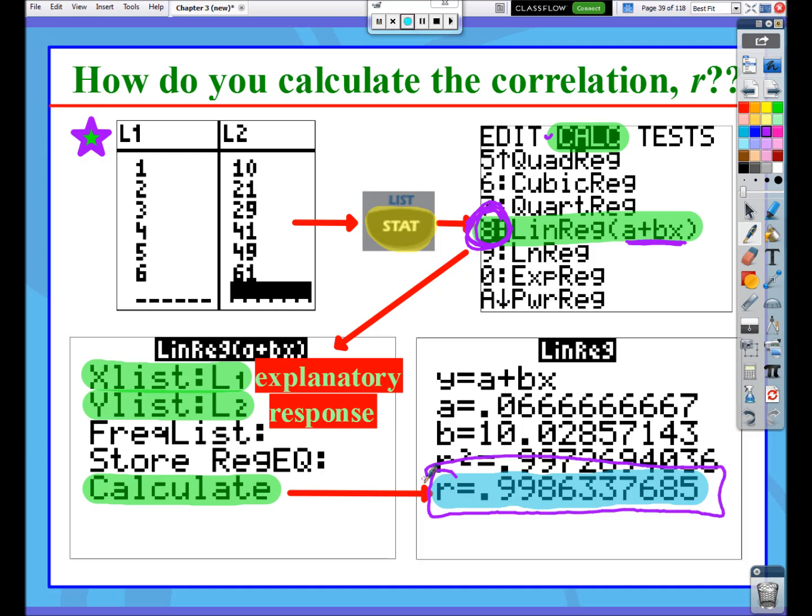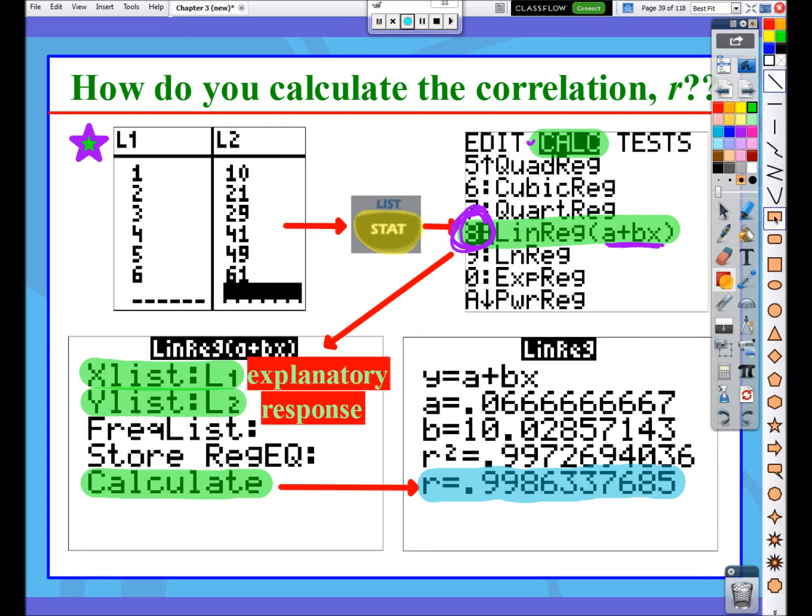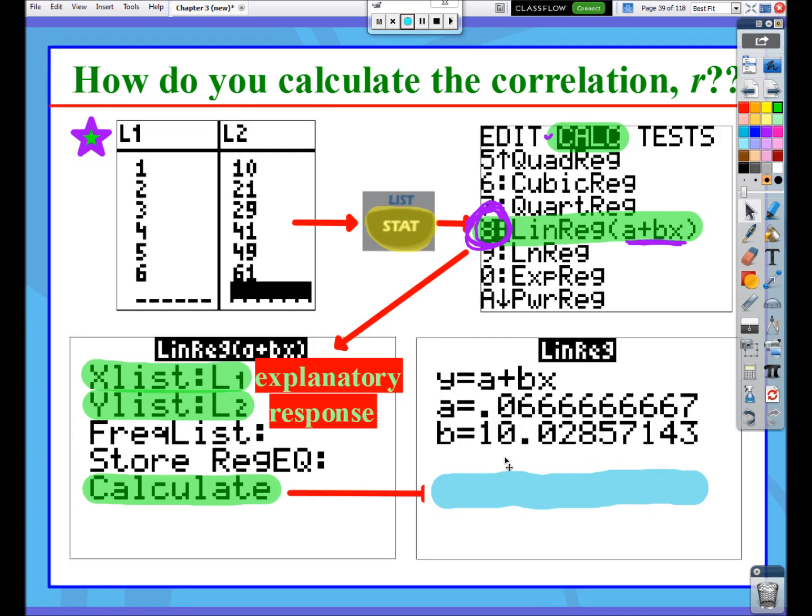Now you might be wondering, if you don't turn on diagnostic on, what does that prevent you from seeing? If you did not turn on the diagnostic on, so many on's I know, then you wouldn't see the R squared or the R when you run the LinReg command. You would only see this A and this B number. And for whatever reason, diagnostic on will allow you to see R and R squared.